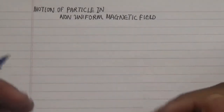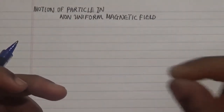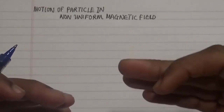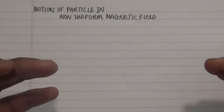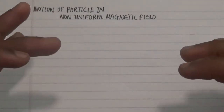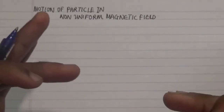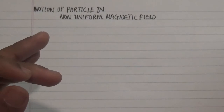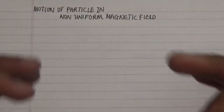In our previous video we talked about uniform magnetic field with respect to a charged particle and how that charged particle actually generated a helix motion. We realized that we need to determine the velocity based not on the component parallel to the magnetic field but the one that is perpendicular to the magnetic field.